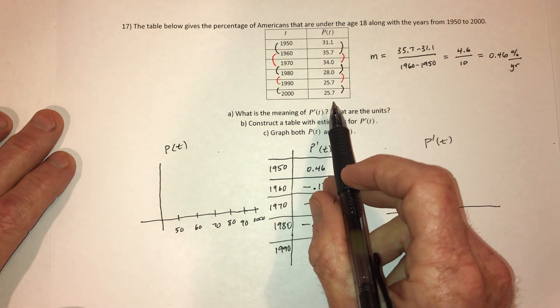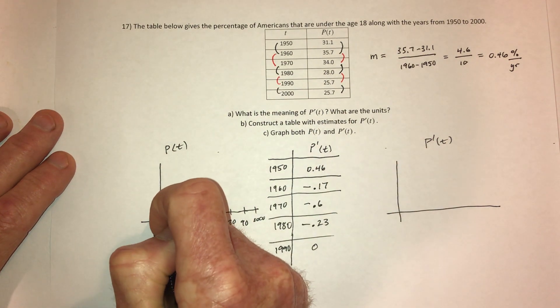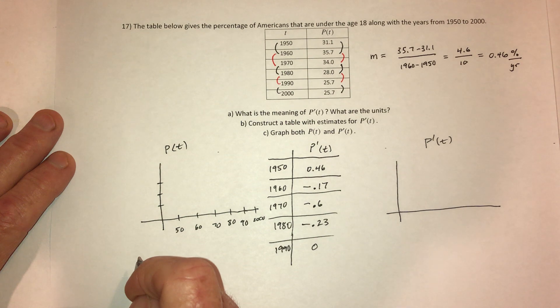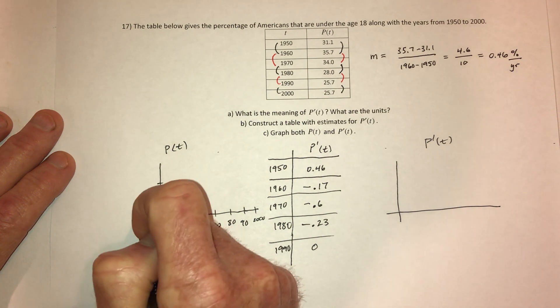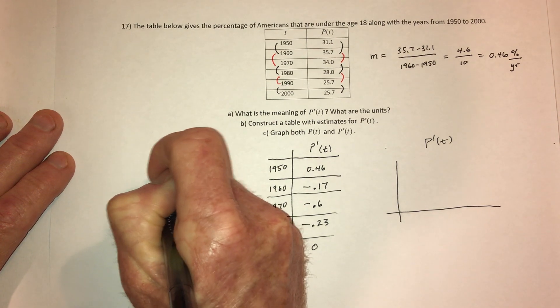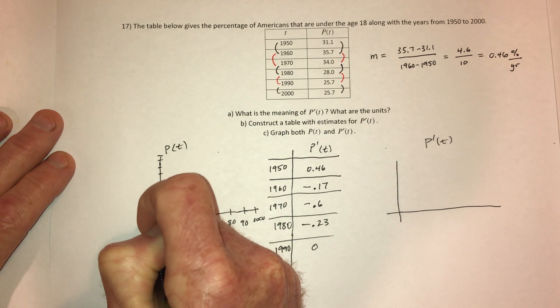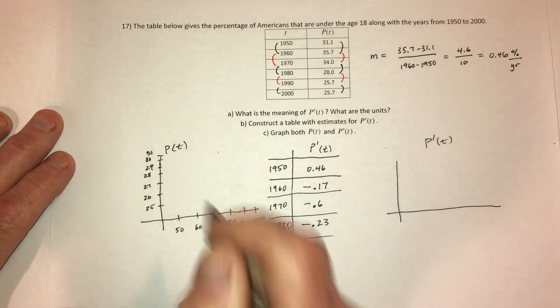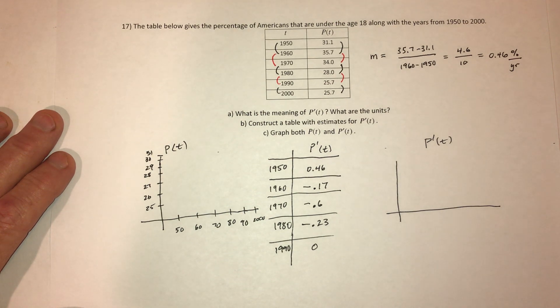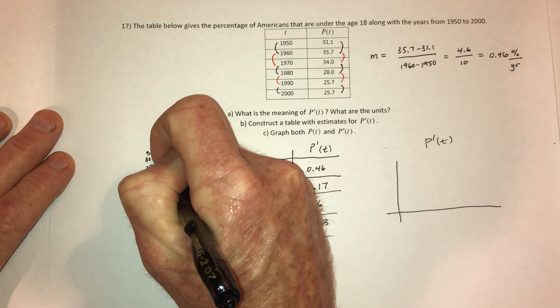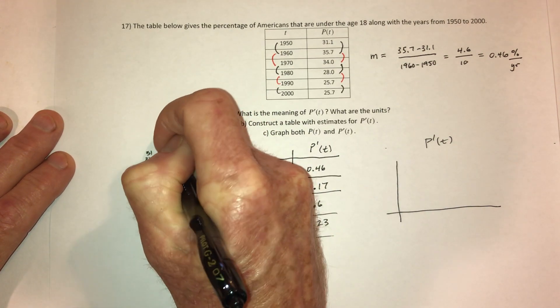And then these numbers go from 25. So let's say here's 10, 20, 30. Actually, maybe I should go. This is 25, 26, 27, 28, 29, 30, 31. Actually, I have to go up to 35. 32, 33, 34, 35.